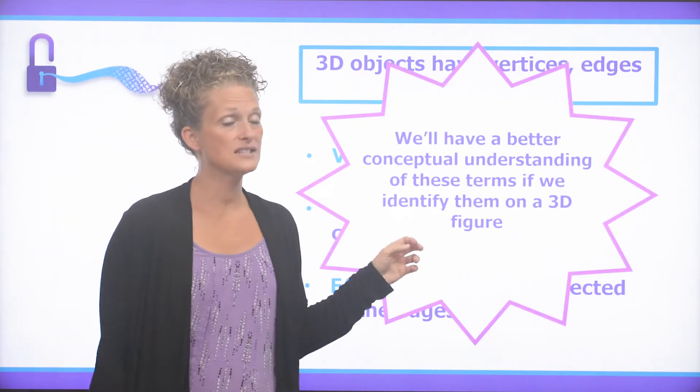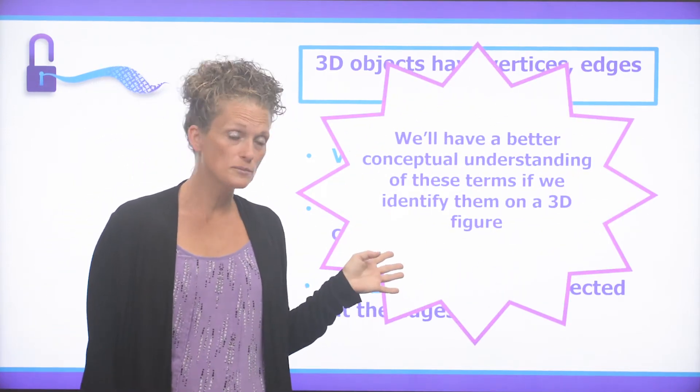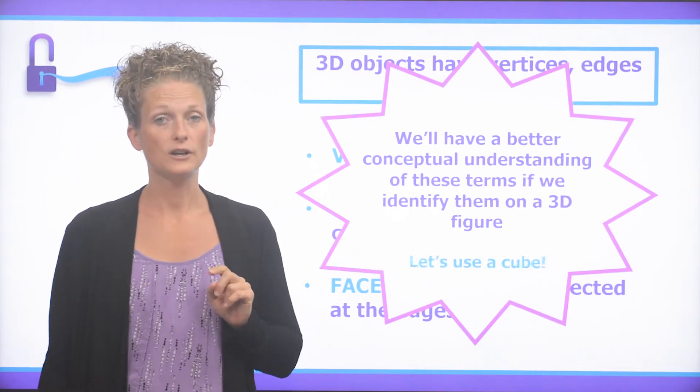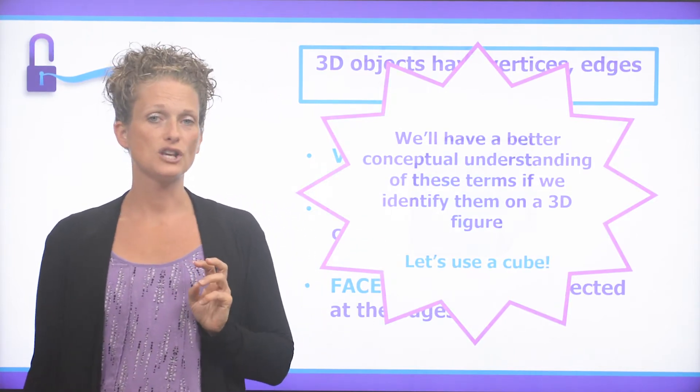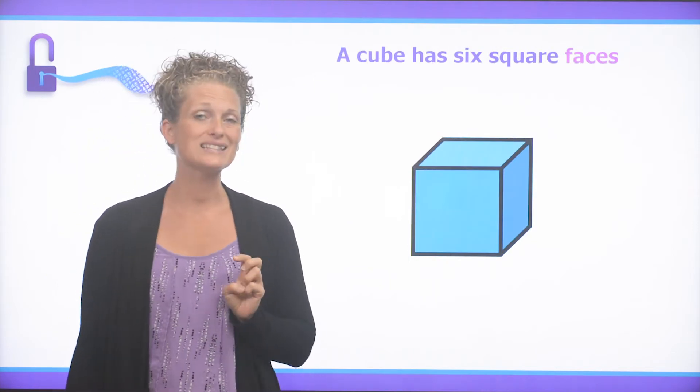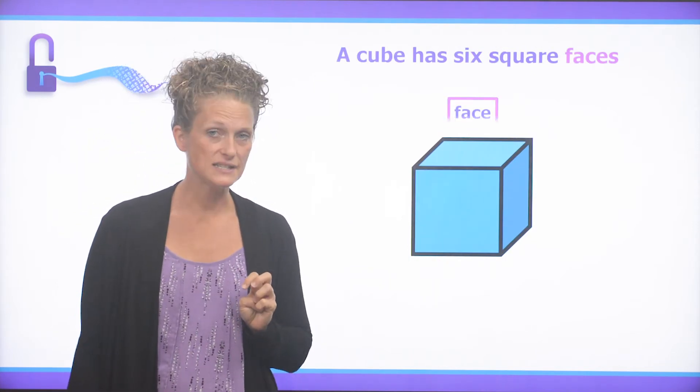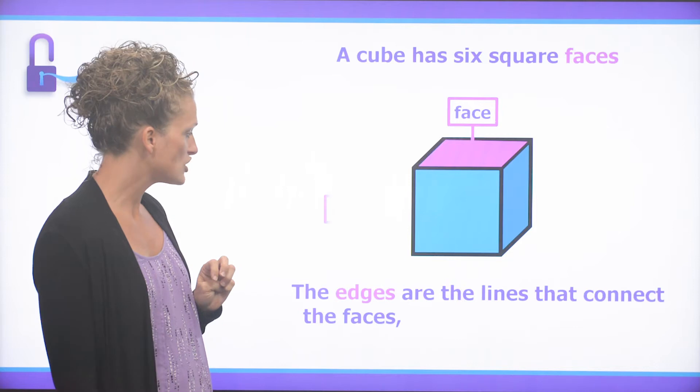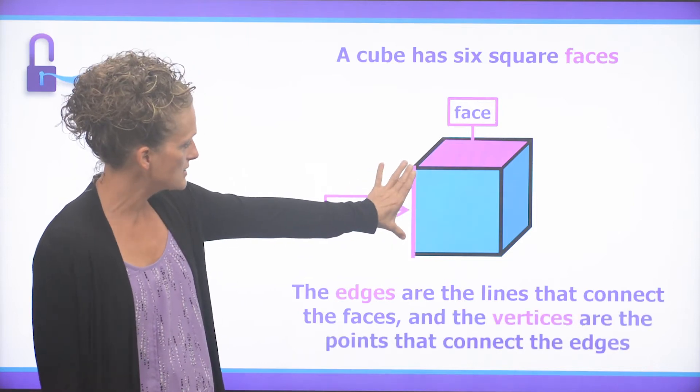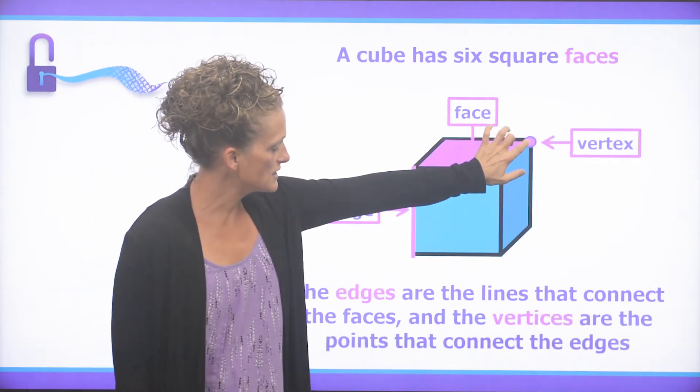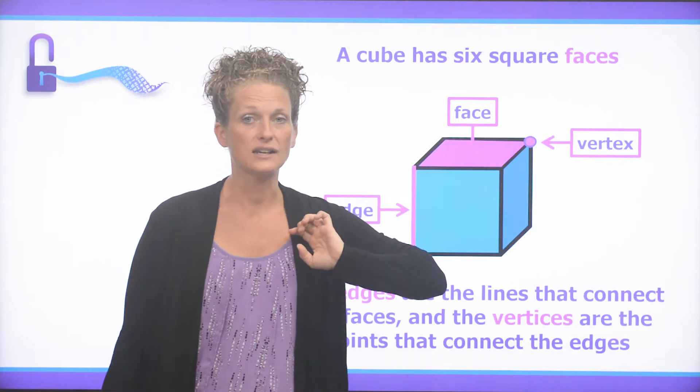We'll have a better conceptual understanding of all of these terms if we can identify them on a 3D figure. So let's go ahead and start with a cube. A cube has six square faces. And the edges are the lines that connect the faces. And the vertices are the points that connect the edges.